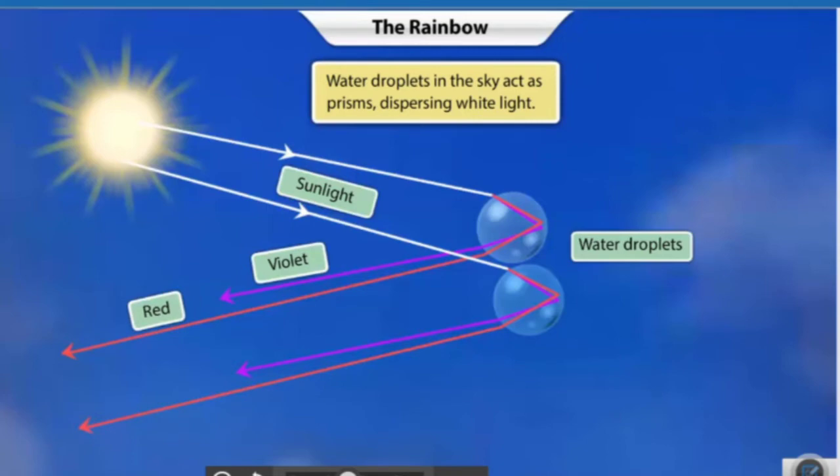Together, millions of such tiny droplets form the bow-shaped spectrum in the sky.